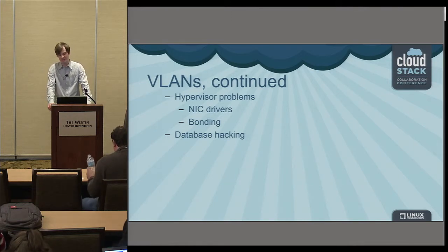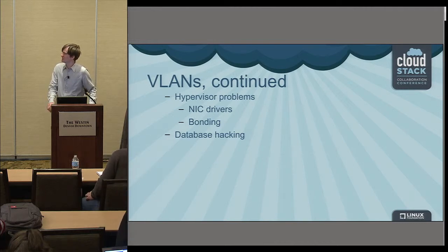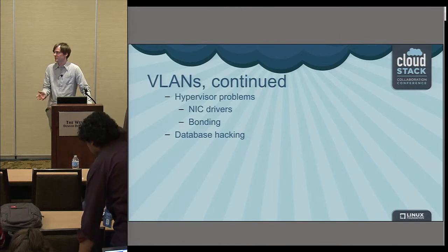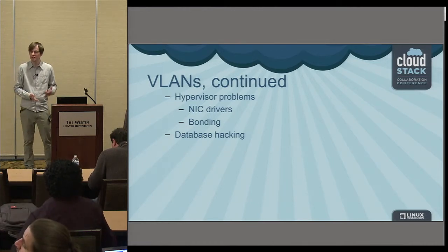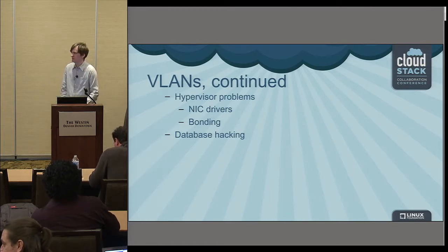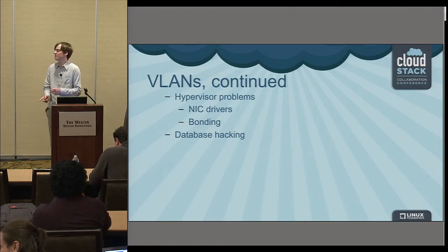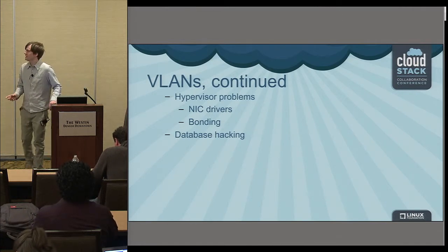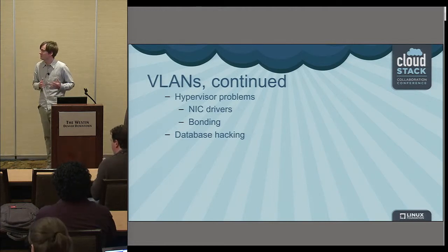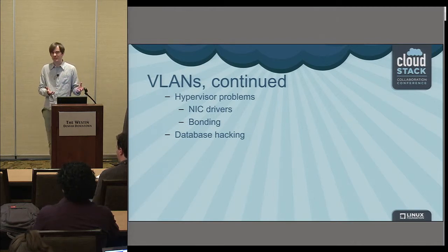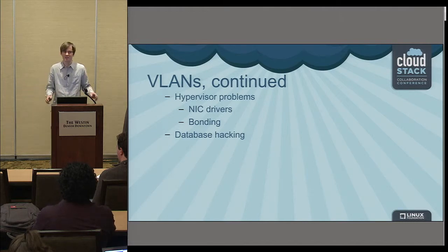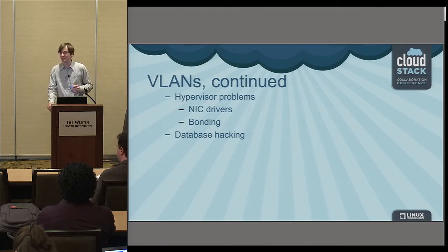Another cause of VLAN problems I've seen is database hacking. Sometimes people configure something incorrectly — say VLAN 100 to 150 instead of 100 to 200 — then go directly into MySQL and update a table. That table is just for the UI, it's not actually used for configuring the actual VLAN. So the UI says the right range but the actual VLAN being used is different. Try not to hack the database; plan ahead and make sure you're using the right VLAN range from the start.